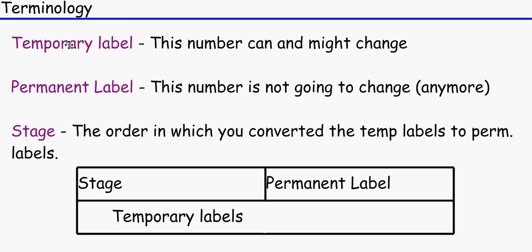A permanent label is one where it's not going to change anymore. And a stage is the order in which you converted the temp labels to permanent labels. Sound a bit confusing? Let's move on to the next one, and then hopefully you'll understand a bit more.